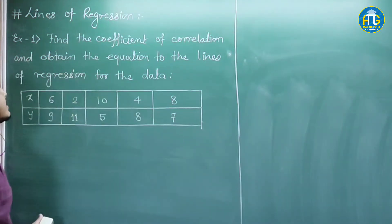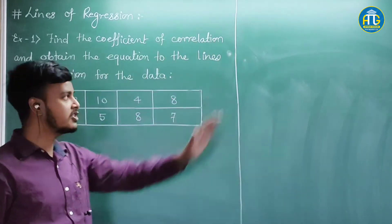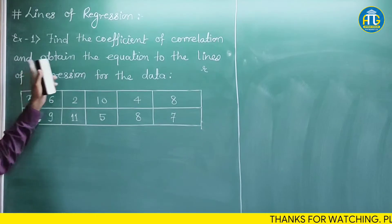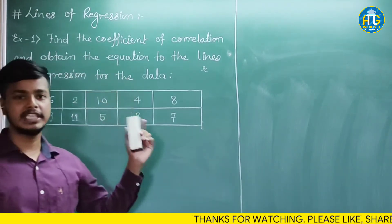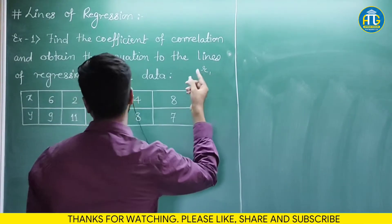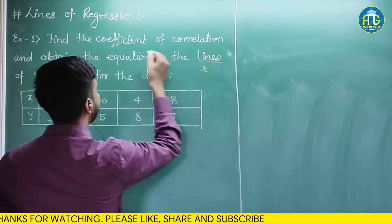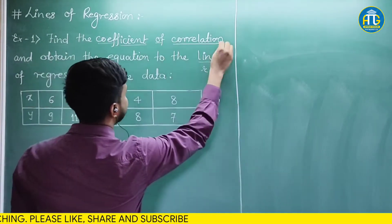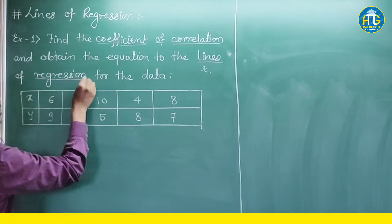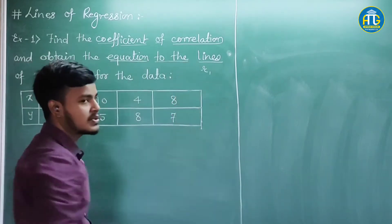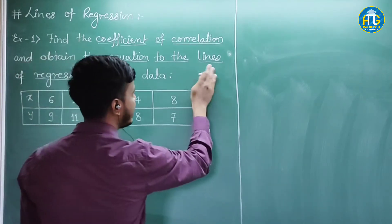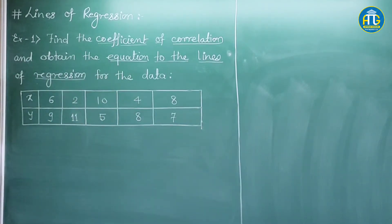This example says: find the coefficient of correlation — that means we have to find out R — and obtain the equation to the lines of regression for the given data. Since it is not explicitly written whether we have to find the line of regression y on x or x on y, it is good practice to find out both. So we have to find out first the coefficient of correlation, small r.